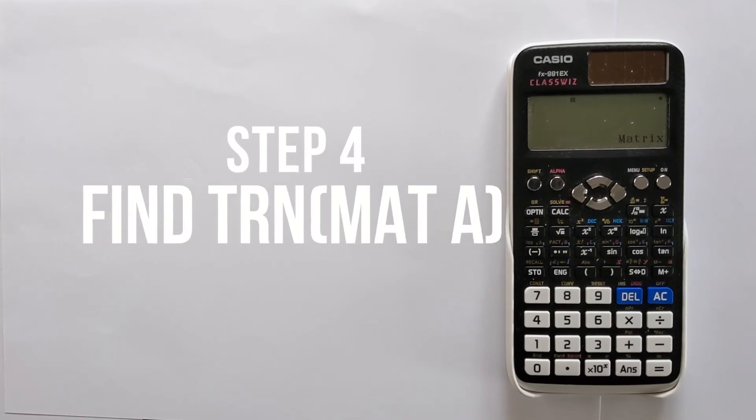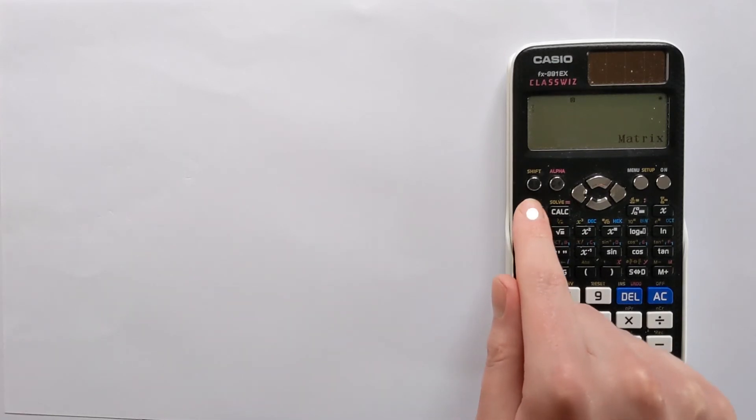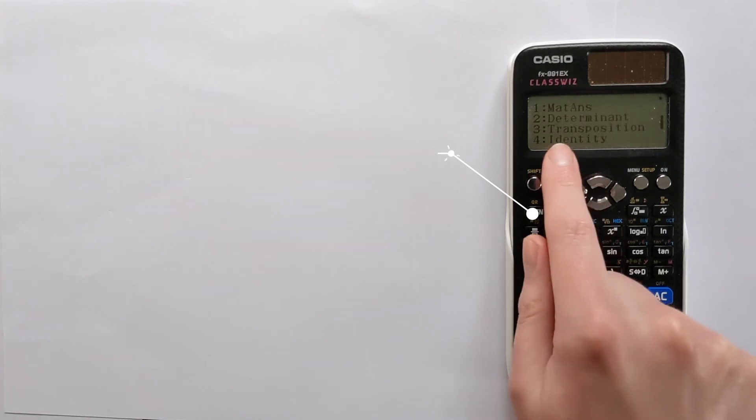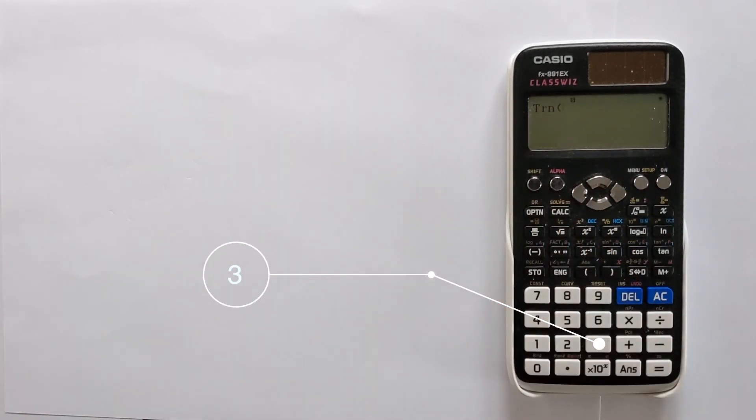The next step is we want this screen here to have TRN and then in brackets we want matrix A. And to do that we're going to use this option button. So we press option, then go down and we've got transposition. So we press three and that's accessing the correct function.